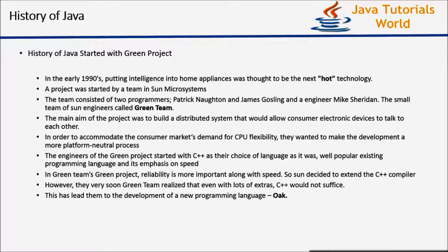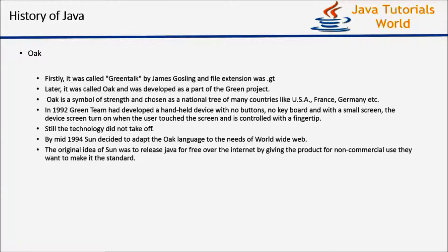They also decided to customize the existing C++ compiler to develop this particular project. After starting the development of the Green Project, very soon they realized that C++ is not suitable to develop this particular project. This led them to develop a new language called Oak. Now let's see how Sun Microsystems' new language came to be named Oak.